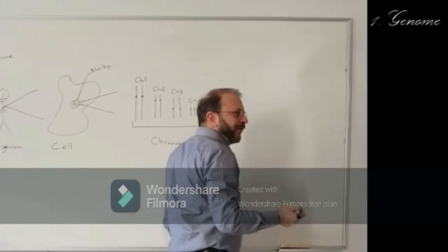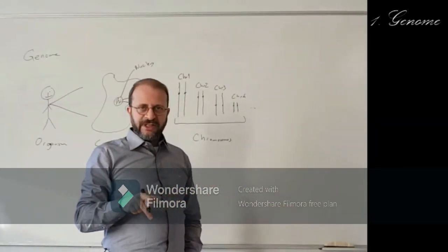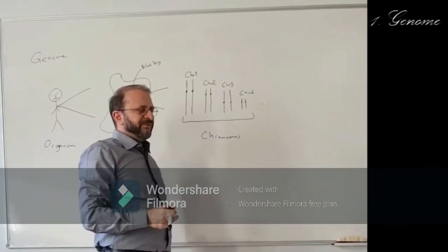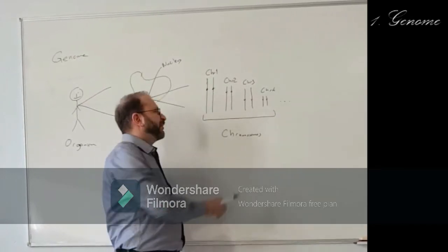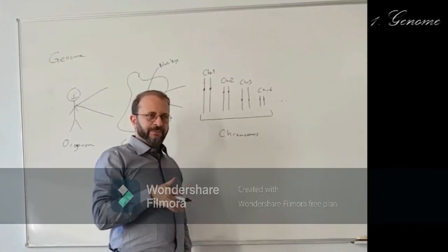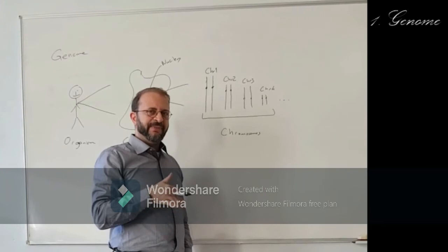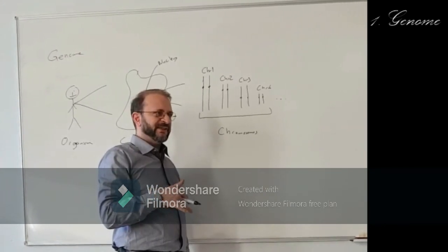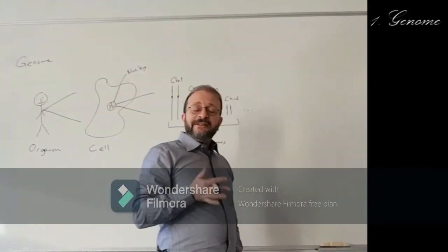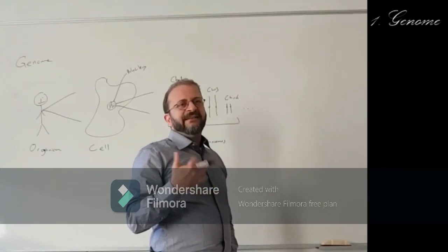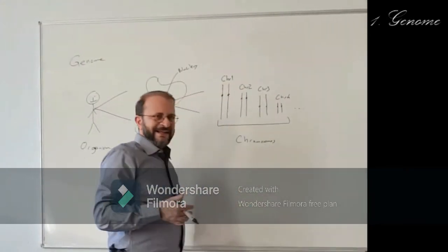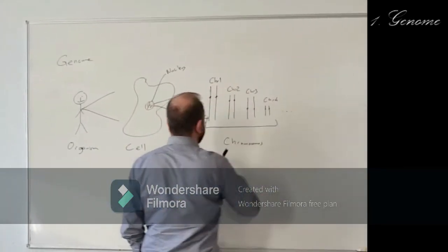We have 23 pairs of chromosomes. One difference between male and female: even though every chromosome is found as pairs, only the last chromosome pair is not a real pair in males, because one is the X chromosome and one is the Y chromosome. We'll look at that later.